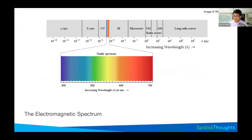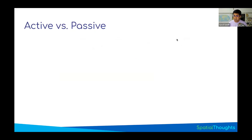Now we're going to learn about a different kind of remote sensing. In the electromagnetic spectrum, you have the microwave radiation spectrum, which consists of longer wavelengths next to infrared. You can design sensors that are sensitive to those wavelengths and use them for detecting certain things.